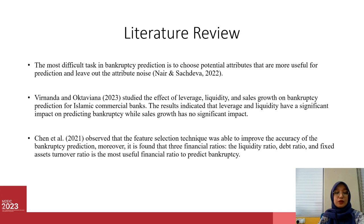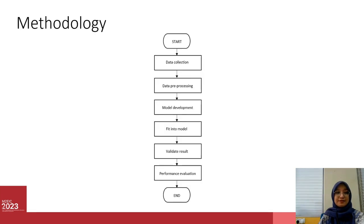This finding is also supported by Chen in 2021, who observed that the feature selection technique was able to improve the accuracy of bankruptcy prediction. Moreover, it was also found that three financial ratios — the liquidity ratio, debt ratio, and fixed assets turnover ratio — are the most useful financial ratios to predict bankruptcy.